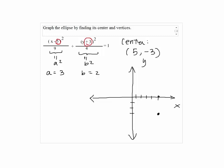So first, to find the vertices, we're going to add b to negative 3 and subtract b from negative 3 to get the vertical vertices. So we have 5 comma negative 3 plus 2, which will give us 5 comma negative 1. And the second one will be 5 comma negative 3 minus 2, so that will give us 5 comma negative 5. So these are the points that are on top of the center and the bottom of the center.